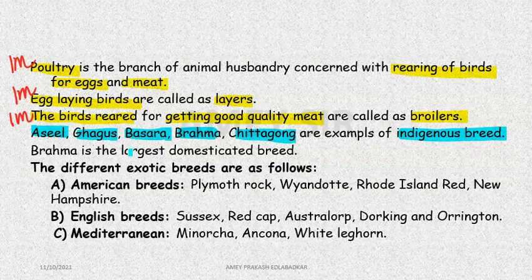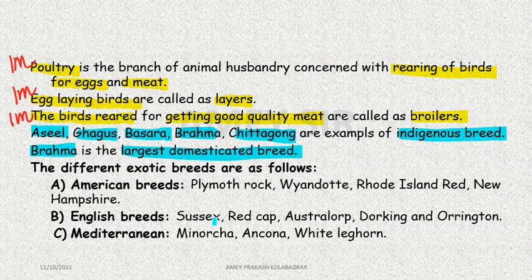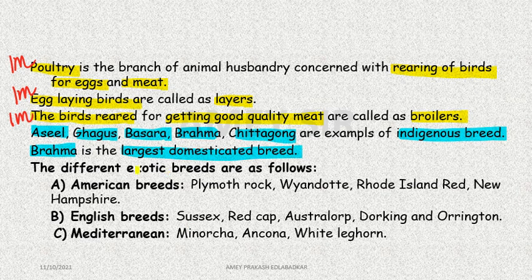Which is the largest domesticated breed? Brahma is the largest domesticated breed. But there are more - we also use English breeds and exotic breeds.